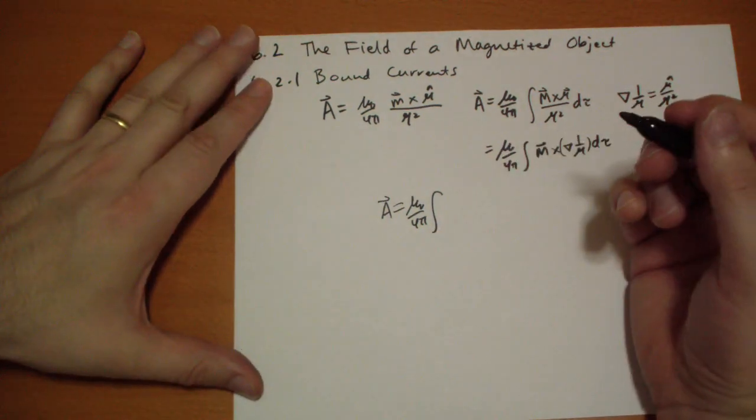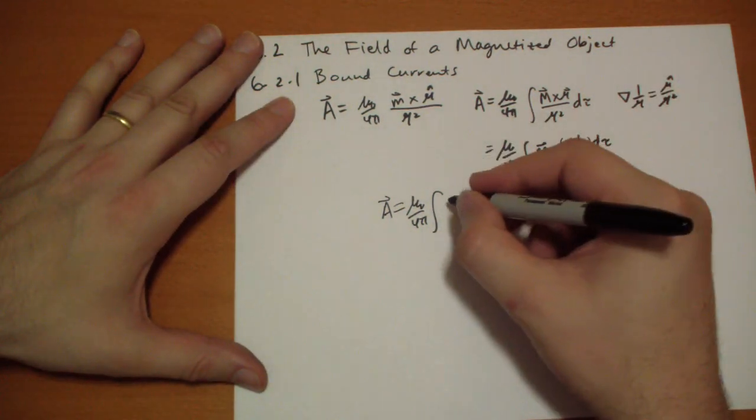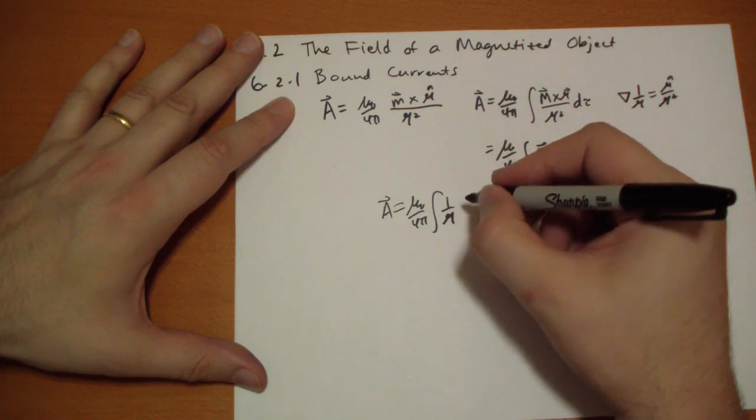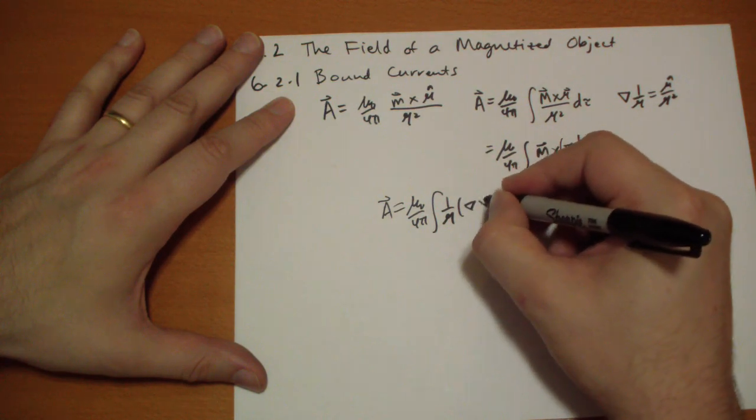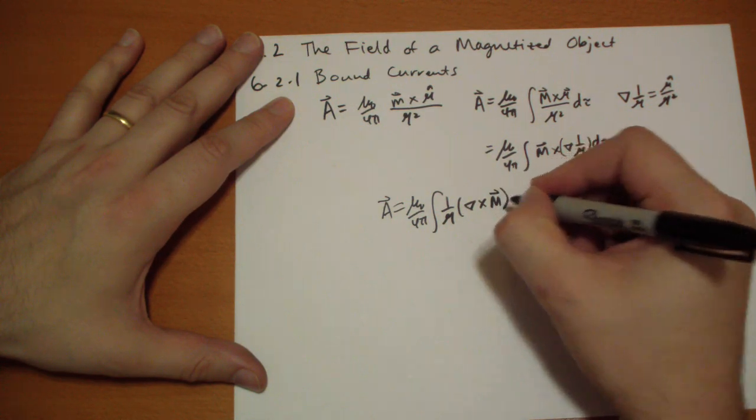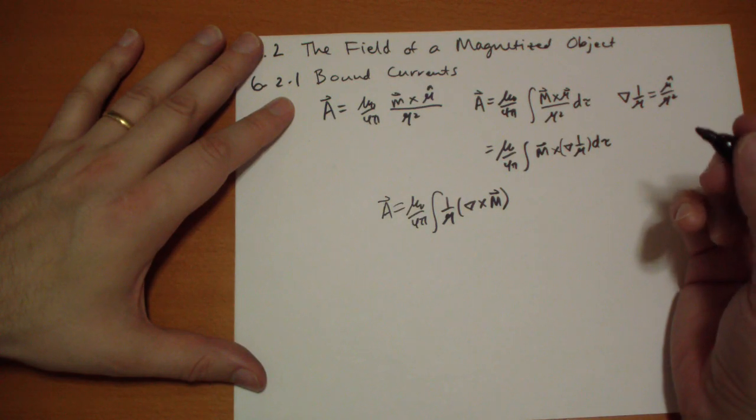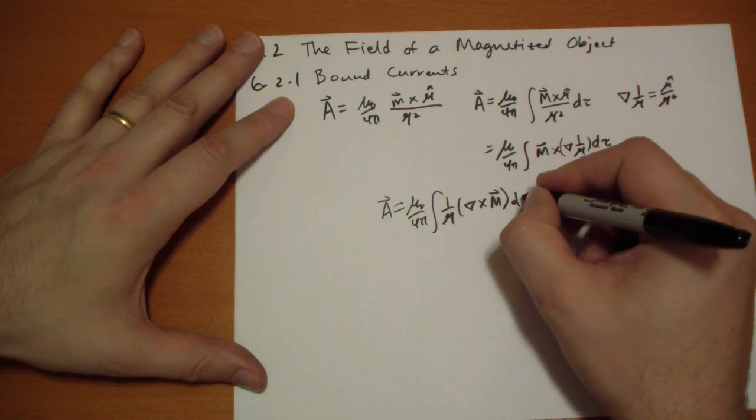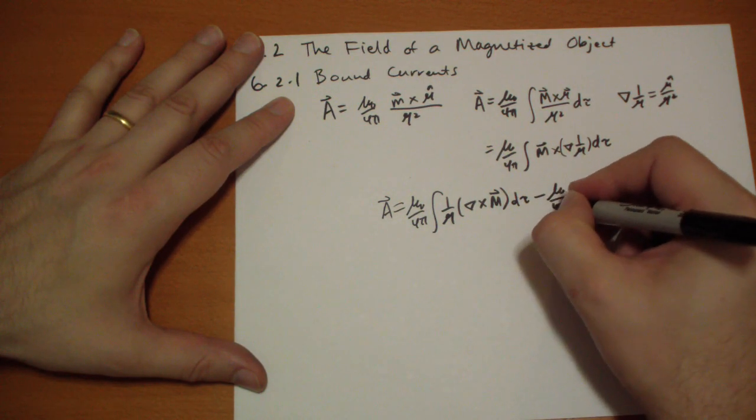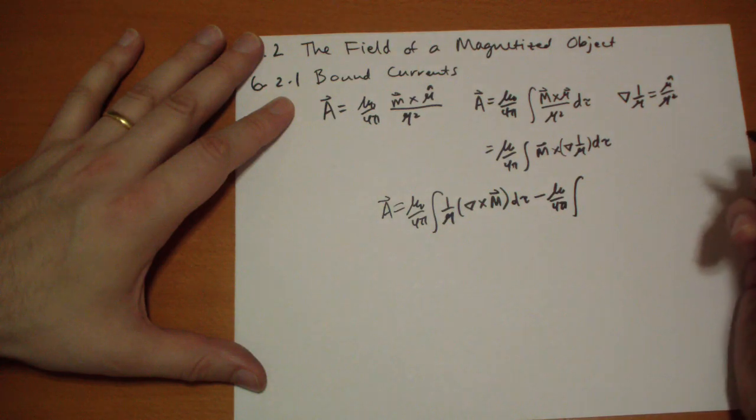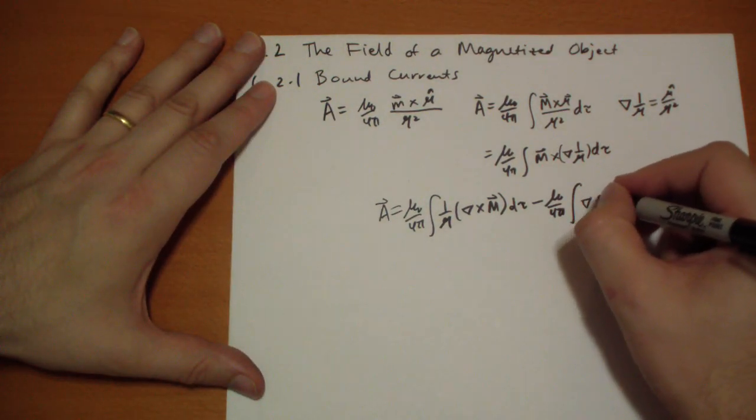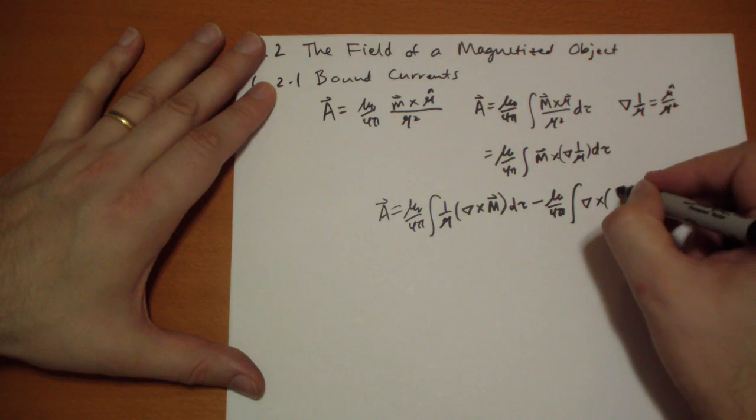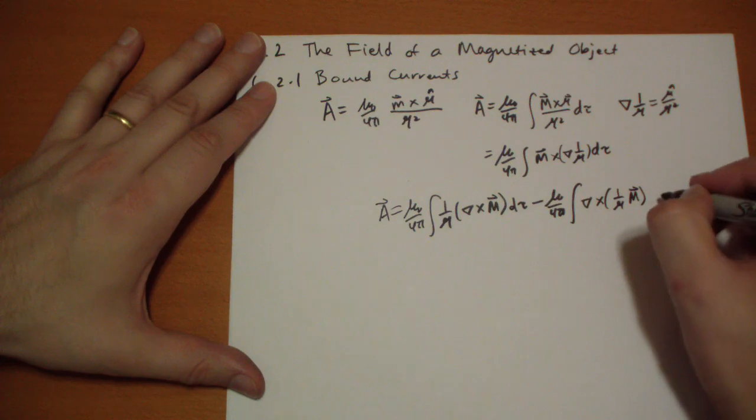So, this is going to be equal to, let's write it out in long form here, the integral of, so we have the scalar field times the curl of the vector field. And then, we have the other term, let's do d-tau here, minus the integral of the curl of the scalar field times the vector field, d-tau.